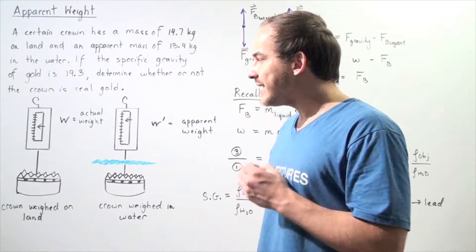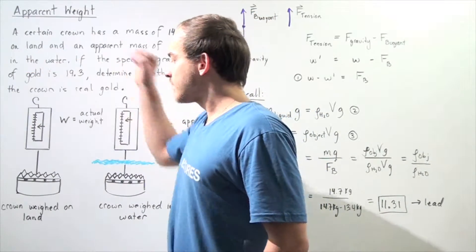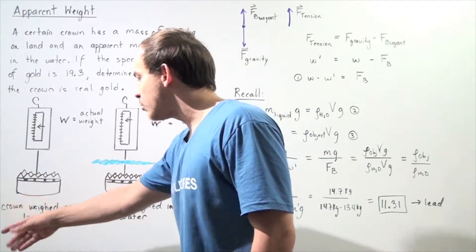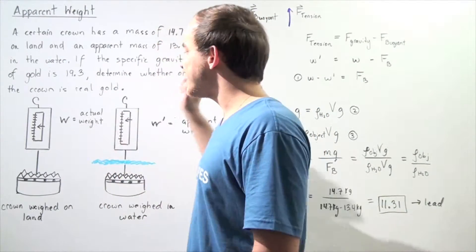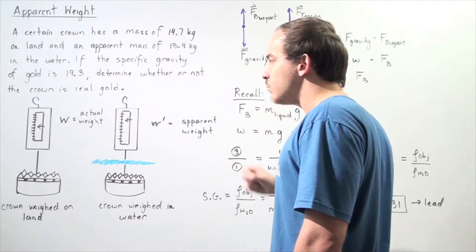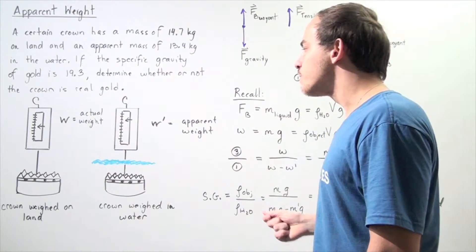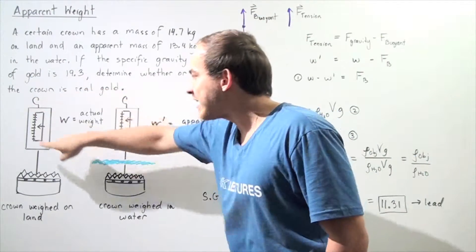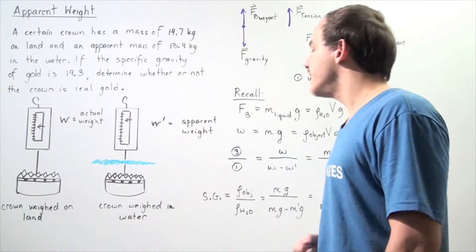Let's begin by taking a spring scale. We take our crown and weigh it using the spring scale on land. This is the diagram for the crown weighed on land. Let's say the weight of the crown is given by W. Then we take that same spring scale, submerge our crown into water, and read the new weight W prime. W is the actual weight and W prime is the apparent weight in water.